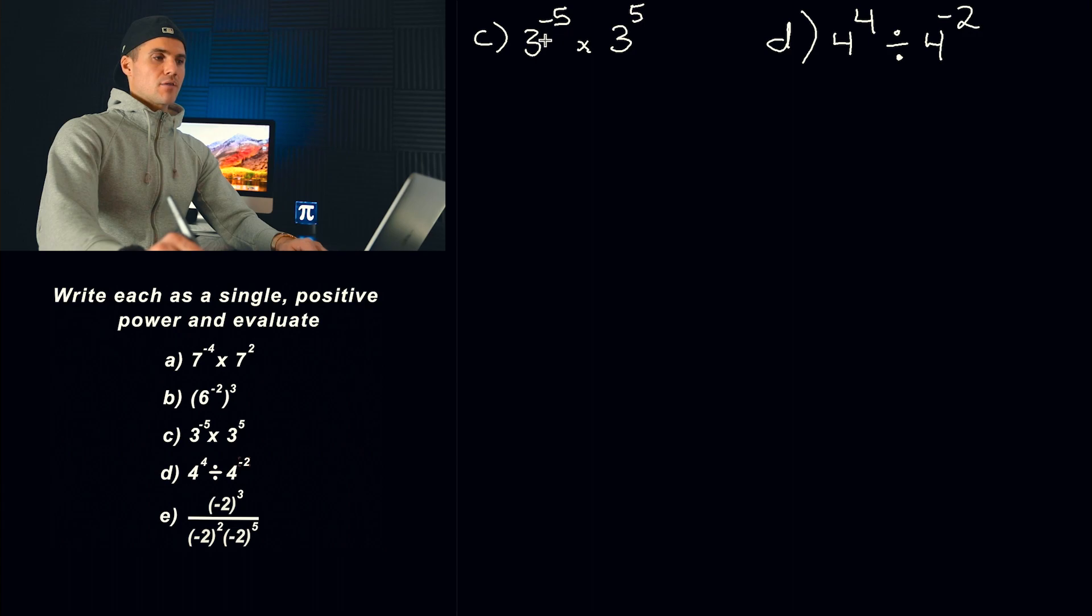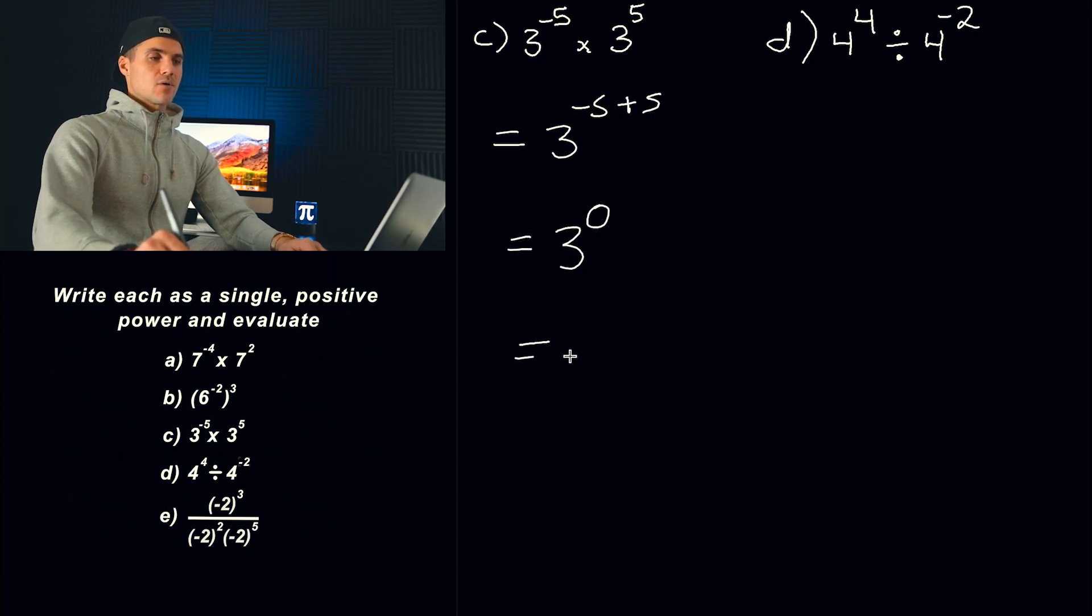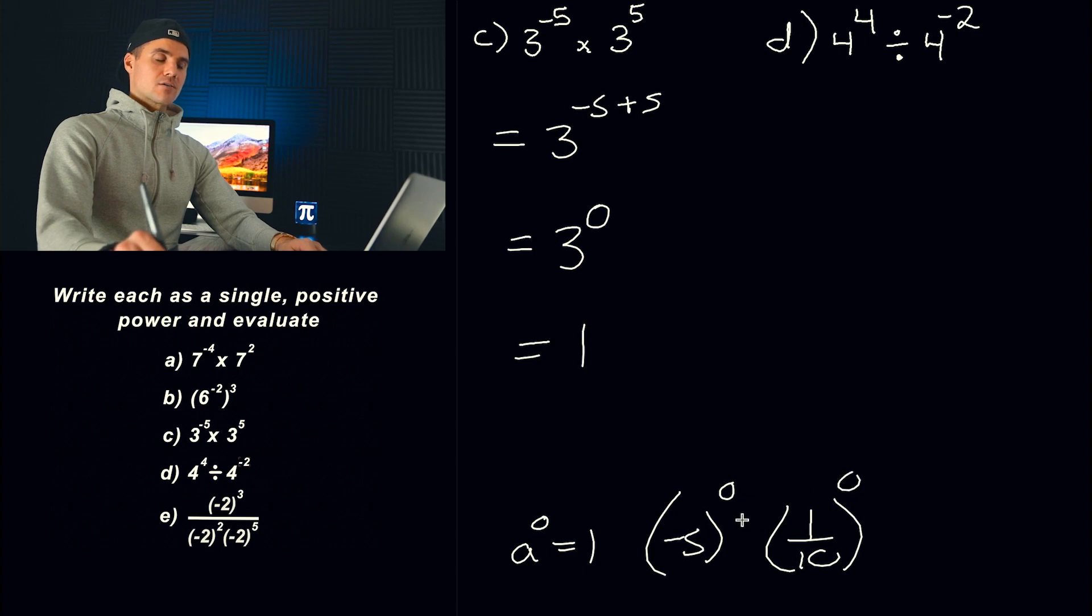Then moving on to part C, we got 3^(-5) × 3^5. So here again, two exponential expressions multiplying with the same base, meaning we could add the exponent. Notice what are we going to be left with? 3^0. Anything to the power of 0 is just 1. No matter if that's a negative number, no matter if that's a fraction, anything to the power of 0 is always going to equal 1. So that's going to be the answer for part C.